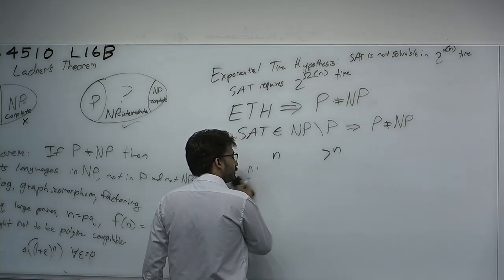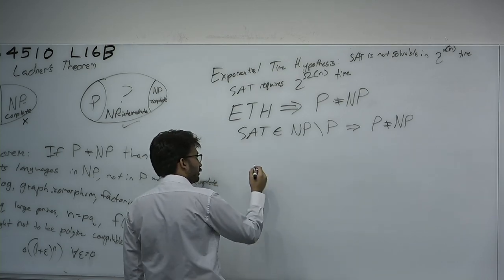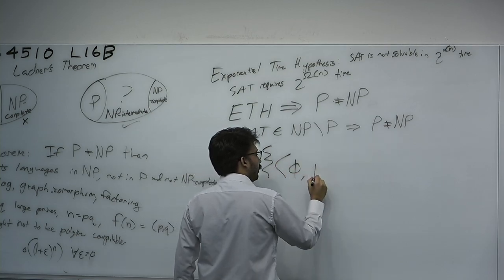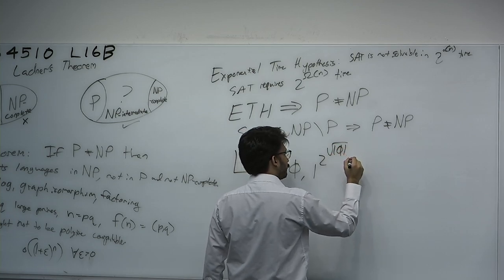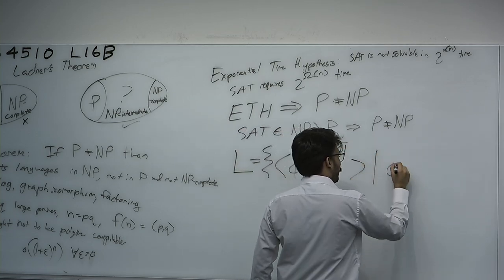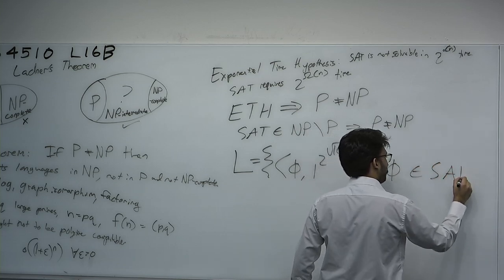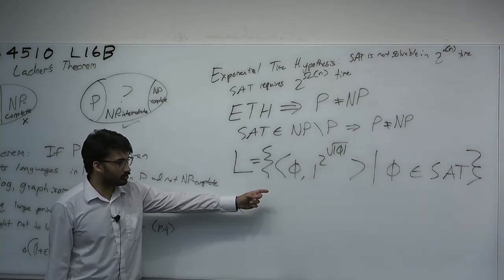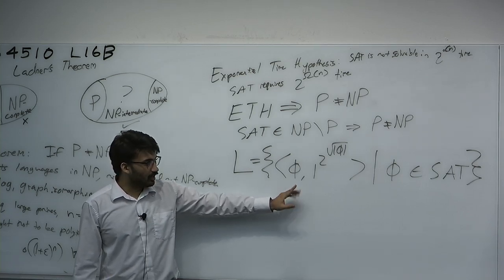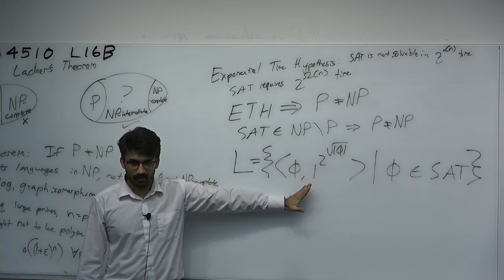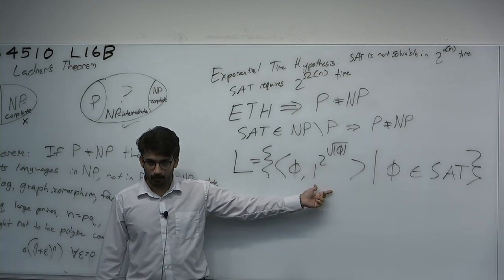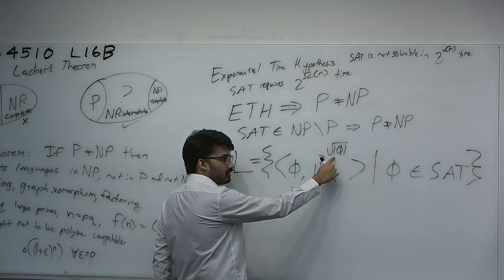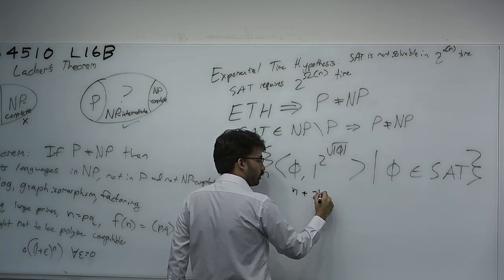We're quite literally going to pad SAT in order to slow down all the algorithms for it, and that'll help us reach contradictions. The language we're going to choose is L = {⟨φ, 1^(2^√|φ|)⟩ : φ ∈ SAT}. We just took SAT, and for each φ we appended garbage. We've padded SAT by a very specific amount. If φ has n variables, this has length n. With the padding, this has length 2^√n.